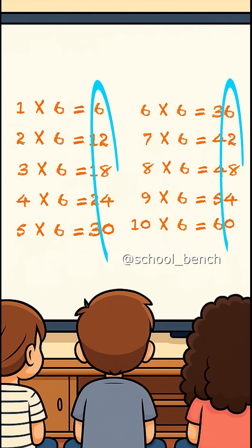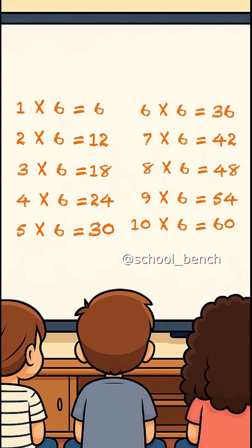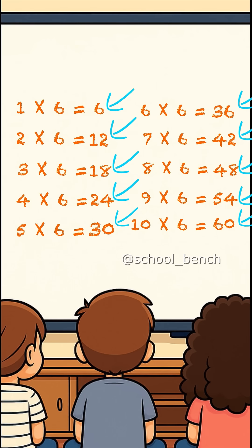The last digits of the multiples of six are in the pattern: 6, 2, 8, 4, 0 — and then repeat: 6, 2, 8, 4, 0.